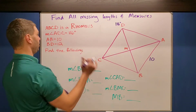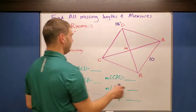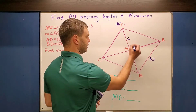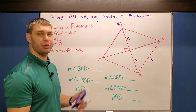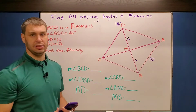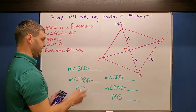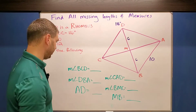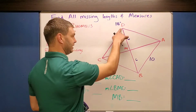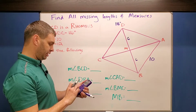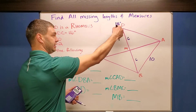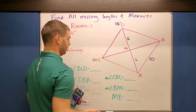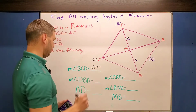Our next shape is a rhombus. We're given that this angle is 116, AB is 10, and BD is 12. Since a rhombus is a parallelogram, the diagonals bisect each other, so I can say this diagonal is 6 and 6. Now let's find some missing parts. The measure of angle BCD: since C and A are consecutive angles, they're supplementary, so 180 minus 116 gives us 64 degrees.